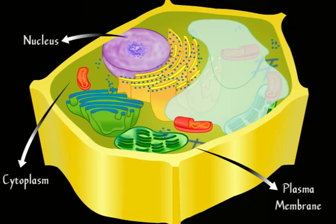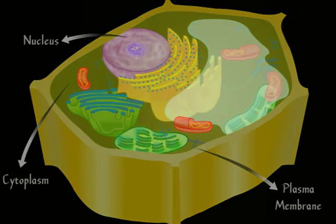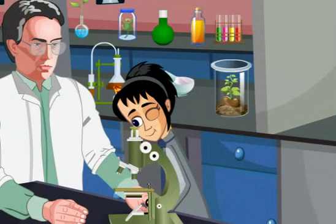nucleus and cytoplasm. So, now I am sure you can answer the question that I asked. Yes, the students will be observing the cells of the material provided to them. Say for example, an onion peel,